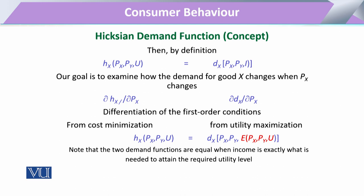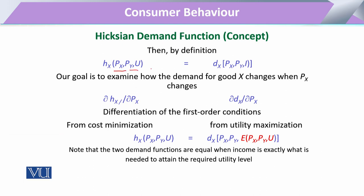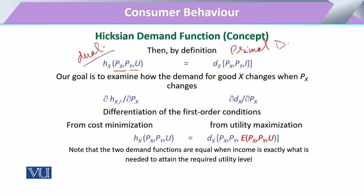When we draw these in equation form for comparison, we have the price of X and price of Y on one side, and on the right side, the Marshallian or primal demand curve and the dual or Hicksian demand function. The only difference is that in the primal we keep income constant, and in the dual or Hicksian we keep the utility level constant.